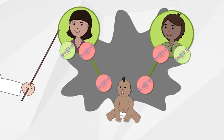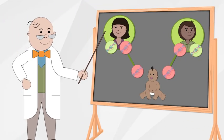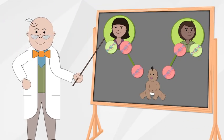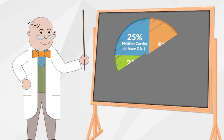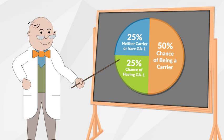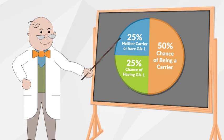Parents of children with GA1 are carriers or have GA1 themselves. Most people don't know they're carriers. When both parents are carriers, there is a 1 in 4 chance their child will inherit GA1. It is possible for a child to not be a carrier if they inherit a working gene from both parents.